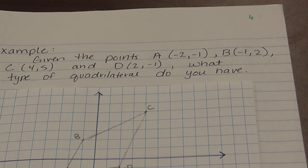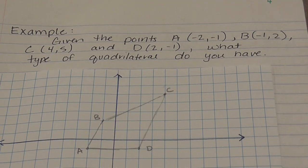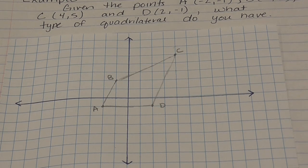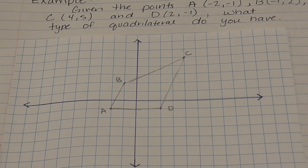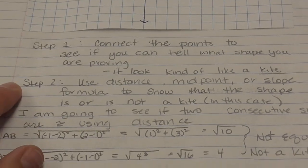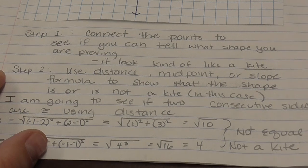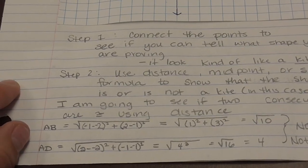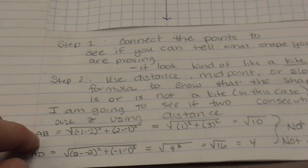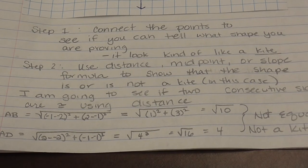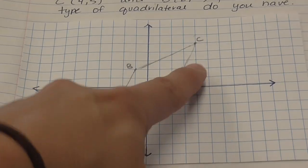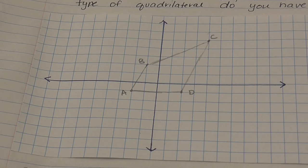Given points A at negative 2, negative 1; B at negative 1, 2; C at 4, 5; and D at 2, negative 1 — what type of quadrilateral is it? After plotting and connecting the dots, it might look like a kite. Using the distance formula on sides AB and AD, one gives square root of 10 and the other equals 4. They are not equal in length, so it's not a kite. It doesn't look like anything is parallel, but we can check.